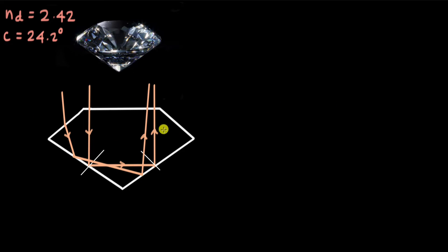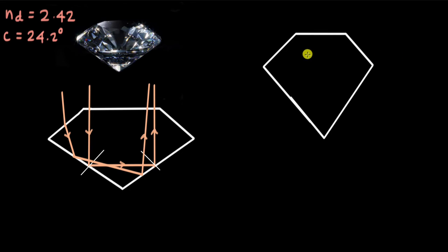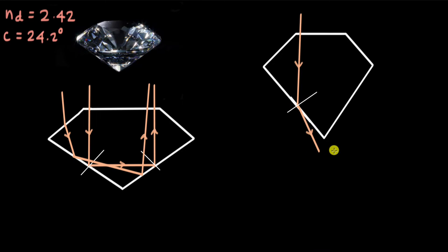One thing that is very important in the shine of a diamond is its cut — how it is carved. If the cut is too deep, the light incident on a face might not undergo total internal reflection because the angle of incidence could be less than the critical angle. Instead of total internal reflection, the light just undergoes refraction and exits from the bottom, making the diamond appear slightly dull.